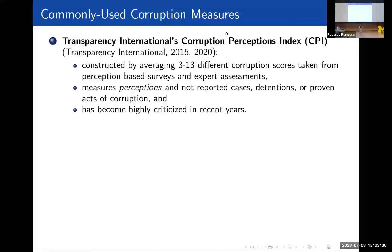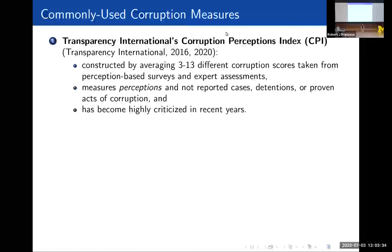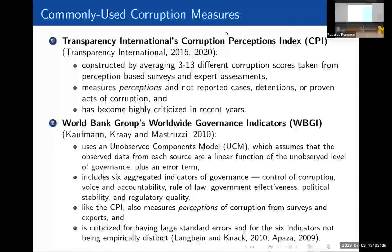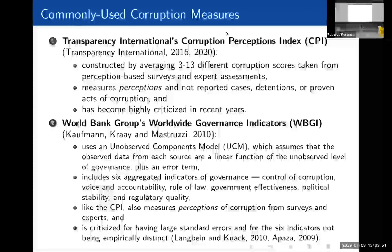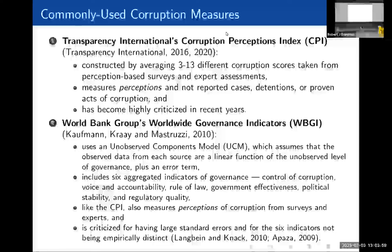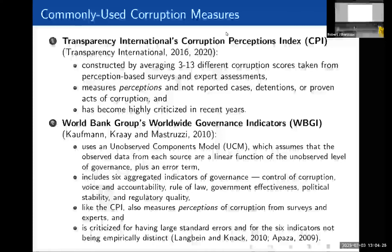However, in recent years it has become highly criticized, especially centered around its methodology. Our second measure of corruption is the World Bank Group's Worldwide Governance Indicators. The WGI uses a measurement model, specifically an unobserved components model or UCM, which assumes that the observed data from each source are a linear function of the unobserved level of governance and an error term. These six indicators of governance include control of corruption, which is what we focus on, voice and accountability, rule of law, government effectiveness, political stability, and regulatory quality. Like the CPI, it also measures perceptions of corruption from surveys and experts. Some criticisms are that it has large standard errors, and the six indicators have been found to not be empirically distinct, meaning they all kind of measure the same thing.